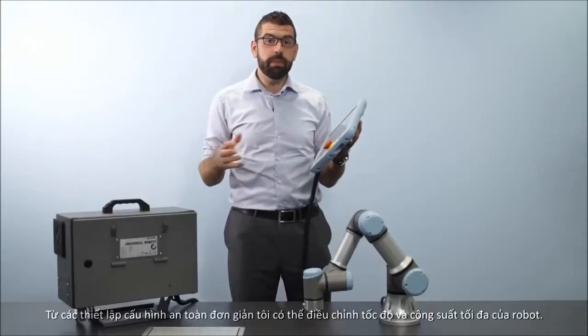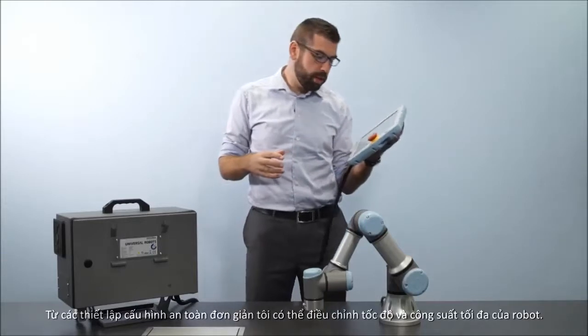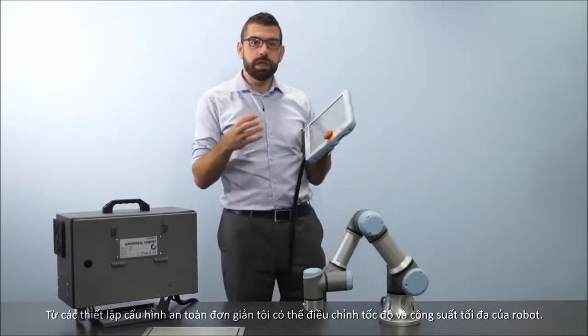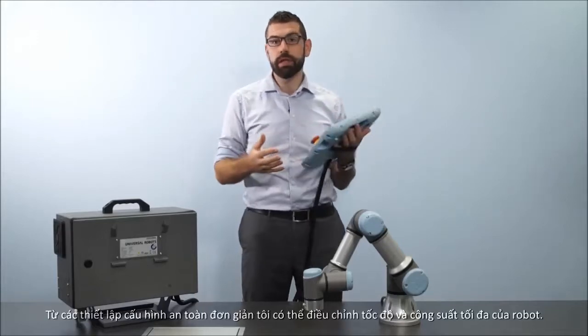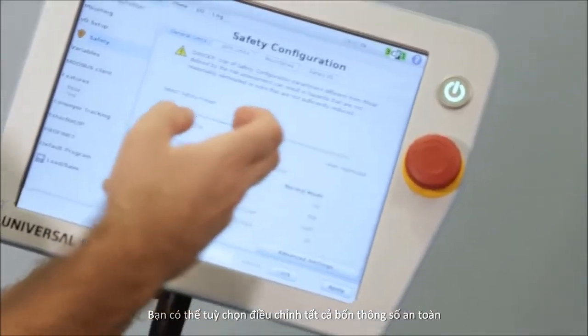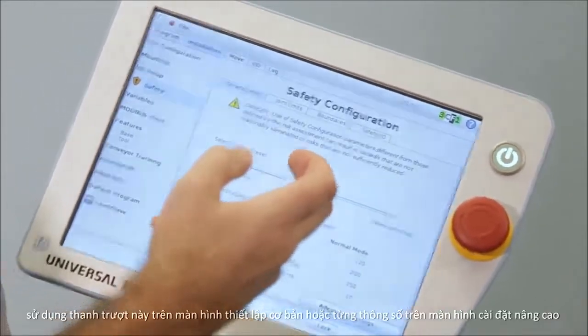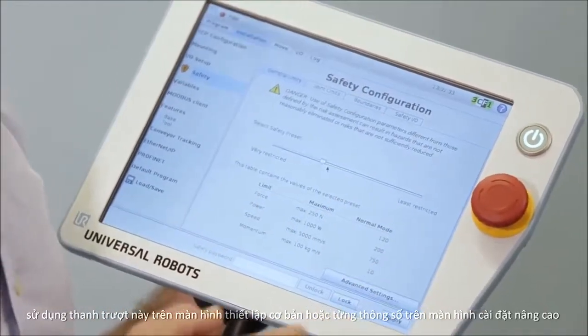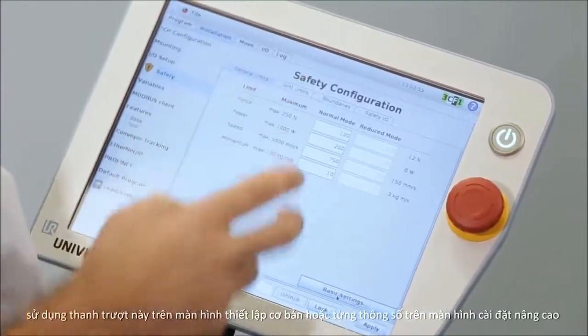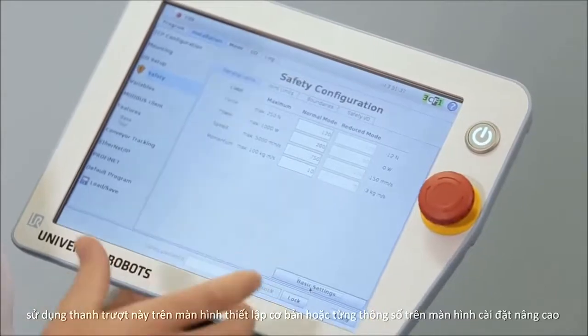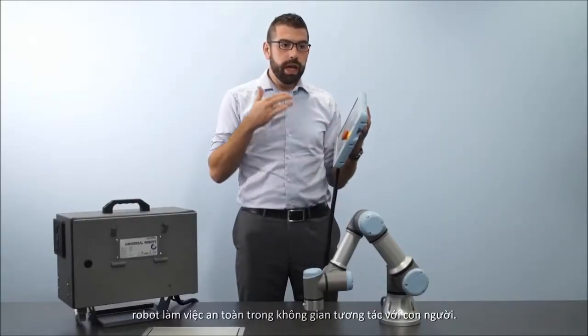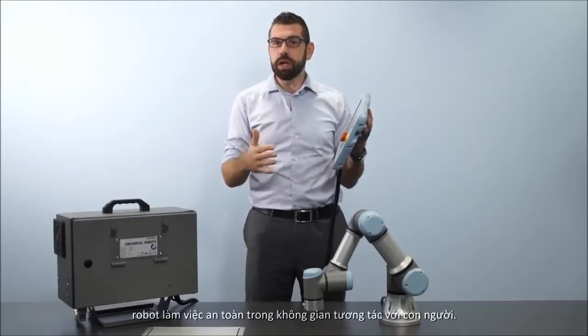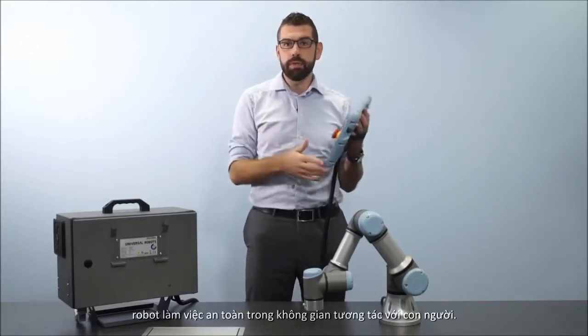From the general limits tab of the safety configuration menu, I can adjust the robot's maximum force, power, speed, and momentum—either all four values together using this slider on the basic settings screen, or each value individually from the advanced settings screen. I can use these to make sure that the robot is safe to work around in a collaborative workspace.